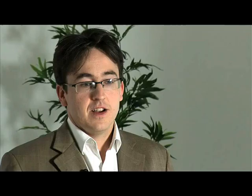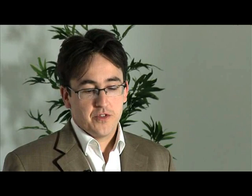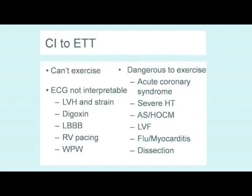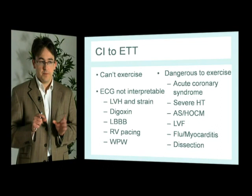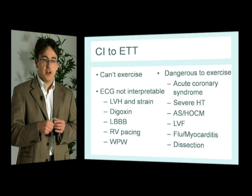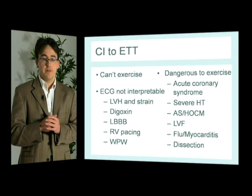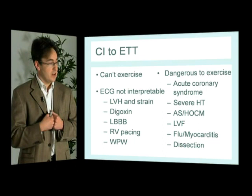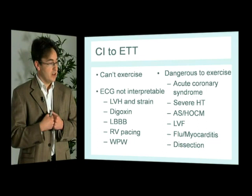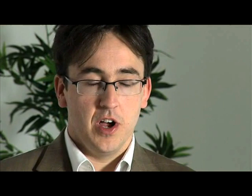Contraindications to exercise tolerance testing include subjects who are unable to exercise, and those in whom the ECG is uninterpretable — such as those with left ventricular hypertrophy and a strain pattern (which resembles T wave inversion), subjects on digoxin who have U waves (again mimicking an ischemic ECG), and subjects with abnormally widened QRS complexes such as left bundle branch block, Wolff-Parkinson-White, or paced rhythms. In this group it is very difficult to assess the ST segment and we must rely on symptoms alone.